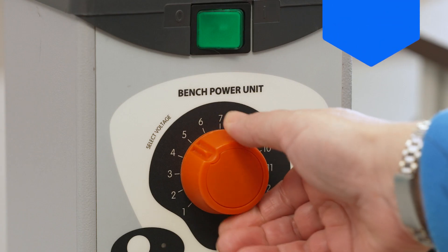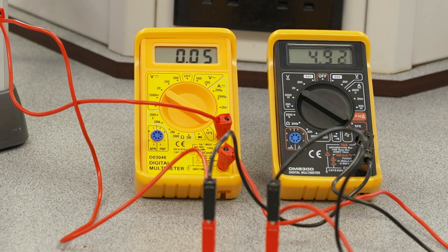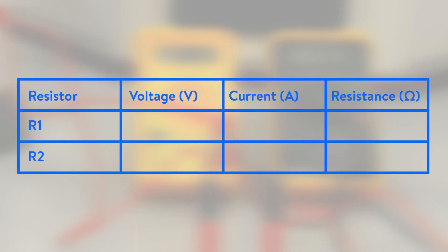Set the voltage on the power supply to 6 volts and turn the power supply on. Record the current reading on the ammeter and the potential difference or voltage on the voltmeter. Make a note of the readings; you could use a table similar to this one.